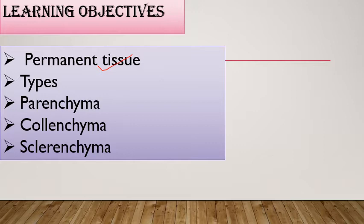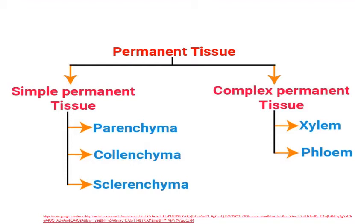Next we will discuss the types: parenchyma, colenchyma, and sclerenchyma. This flowchart shows the classification of permanent tissue. Permanent tissue is of two types: simple permanent tissue and complex permanent tissue.